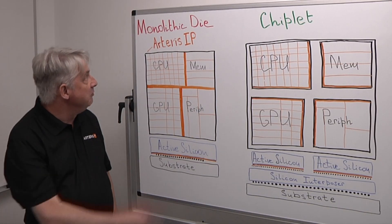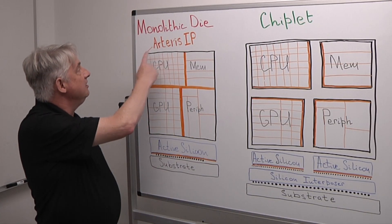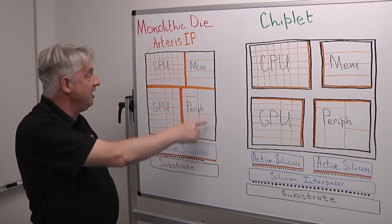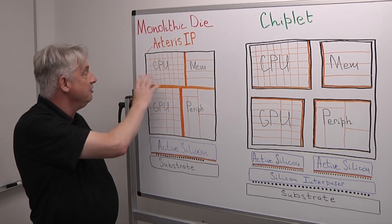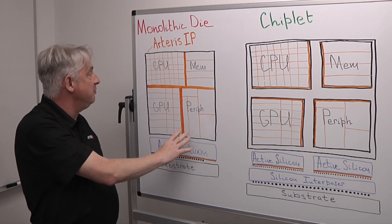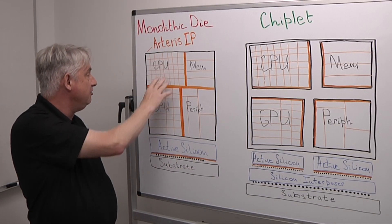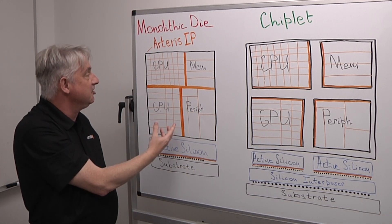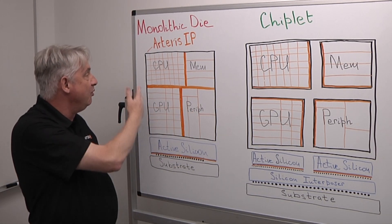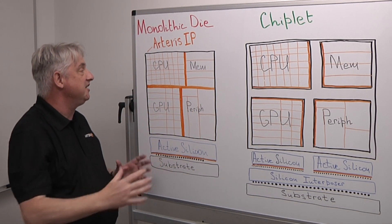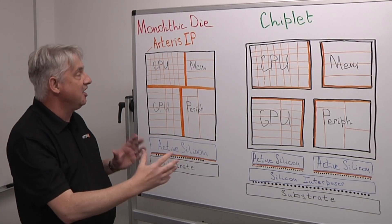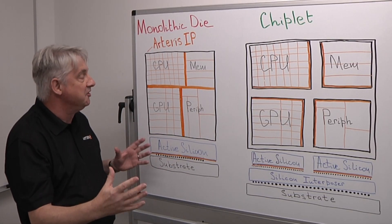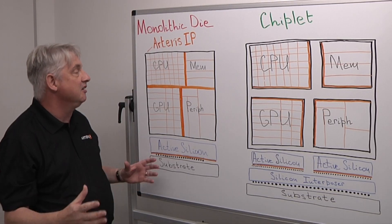Here you see a traditional monolithic die. In the past, SoCs were a single die — you built the whole thing on one chip. Here we have an example with CPU, GPU, some memory, and peripherals. But we're running into challenges with, for example, just the size of the die. As designs get bigger and more complex, there's actually a limit — the reticule limit — which is 858 millimeters squared currently, and you simply can't go bigger than that.